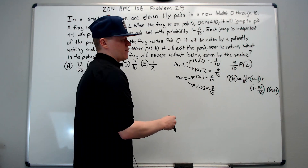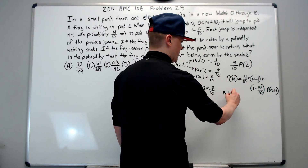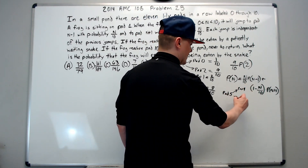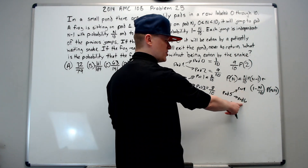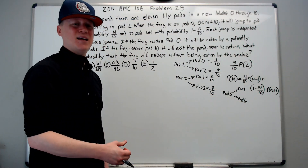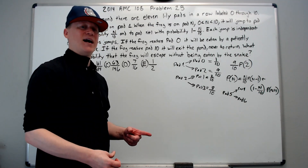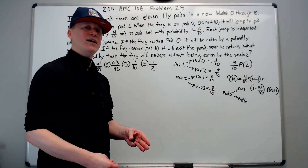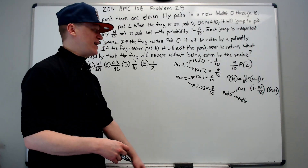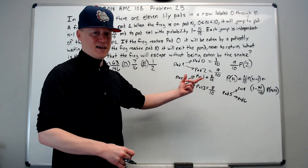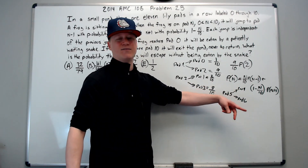We should also think about pad 5. The chance the frog goes from pad 5 to pad 4 or pad 6 is 5 in 10 each — equal probability both directions. From that position, we should picture symmetry. Once he reaches pad 5, there's a 1 in 2 chance he gets out of the pond or gets eaten by the snake — both should be equal. The chance of surviving from pad 4 is the chance of dying from pad 6, and so on.